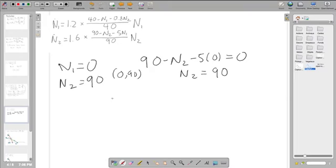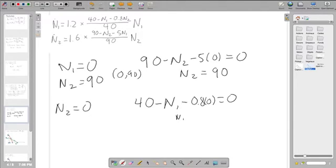And now we'll approach the N2 equals zero the same way, where we have 40 minus N1 minus 0.8 times zero, thus giving us an N1 equals 40. And in this case, the steady state will be 40 comma zero.